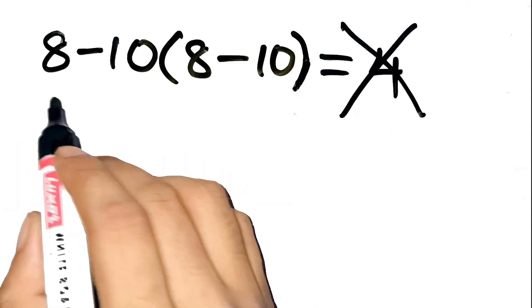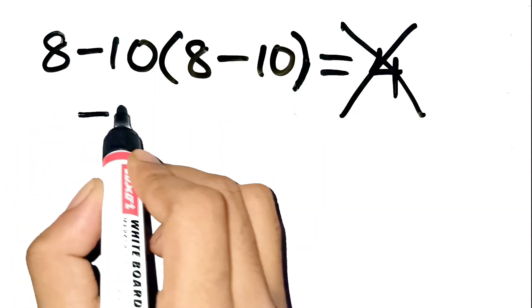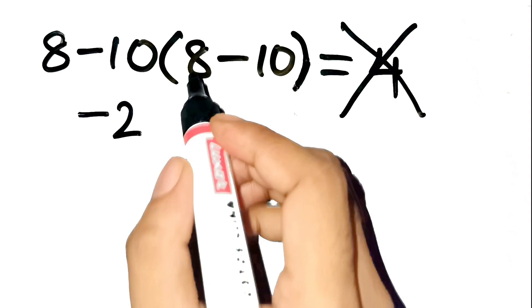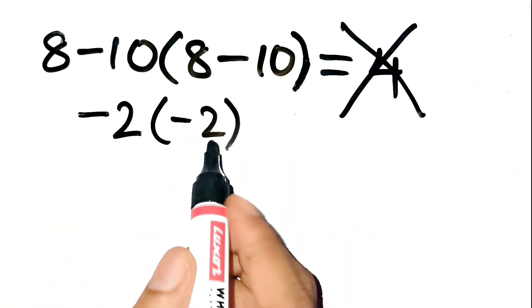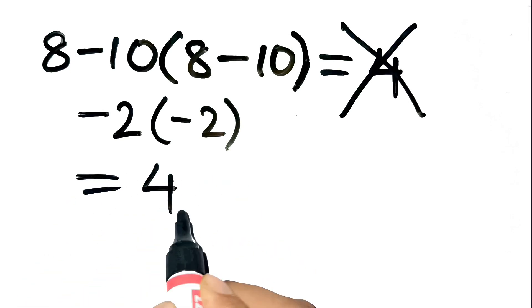So you go, okay, 8 minus 10 is negative 2. And inside the parentheses, 8 minus 10 is also negative 2. Then you multiply negative 2 times negative 2, and boom, you get 4.